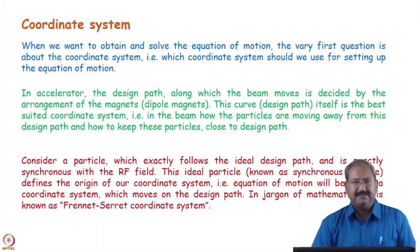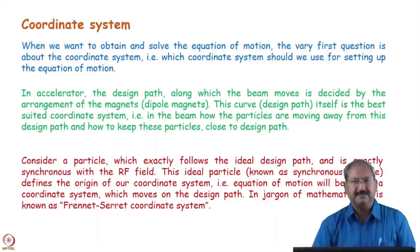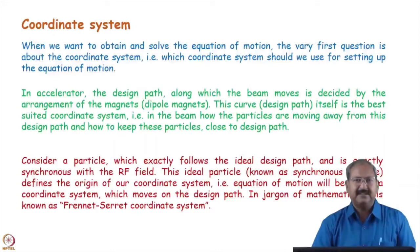The design trajectory is decided by the arrangement of dipole magnets. A particle launched in the correct direction will trace the path defined by those dipoles. A particle that follows exactly the design path with the correct energy and arrives at the RF cavity at the correct phase is called the synchronous particle. We take this synchronous particle as the origin and study the motion of all other particles relative to it.